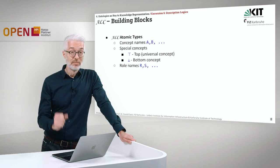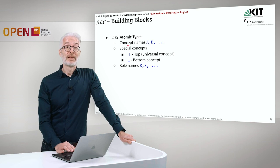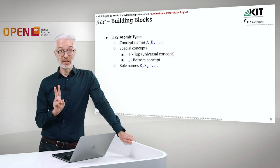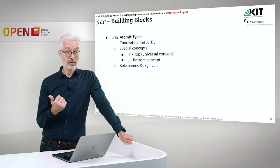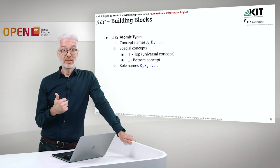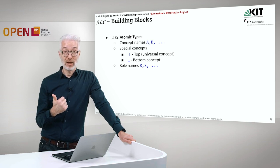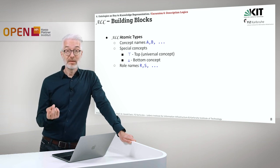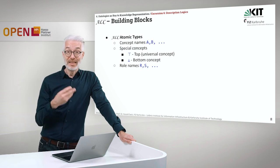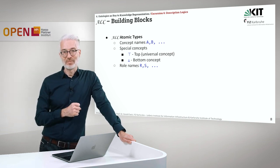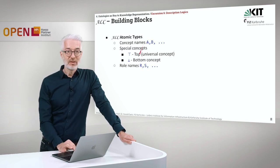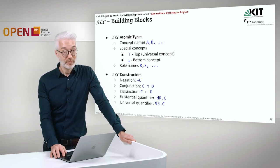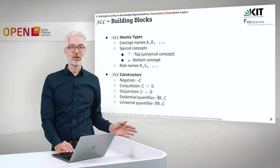In ALC we have atomic types: concept names such as A, B, C, and two special concepts. The top concept, or universal concept, is more general than every other concept and is the superclass of every other concept. The bottom concept is the opposite — the most special concept, which is a subclass of every other concept. We also have role names, starting with capital letters R, S, T and so on. The constructors include negation, conjunction, disjunction, and two variants of quantifiers: existential quantification, which restricts a role R to a specific class in its range, and the universal quantifier.